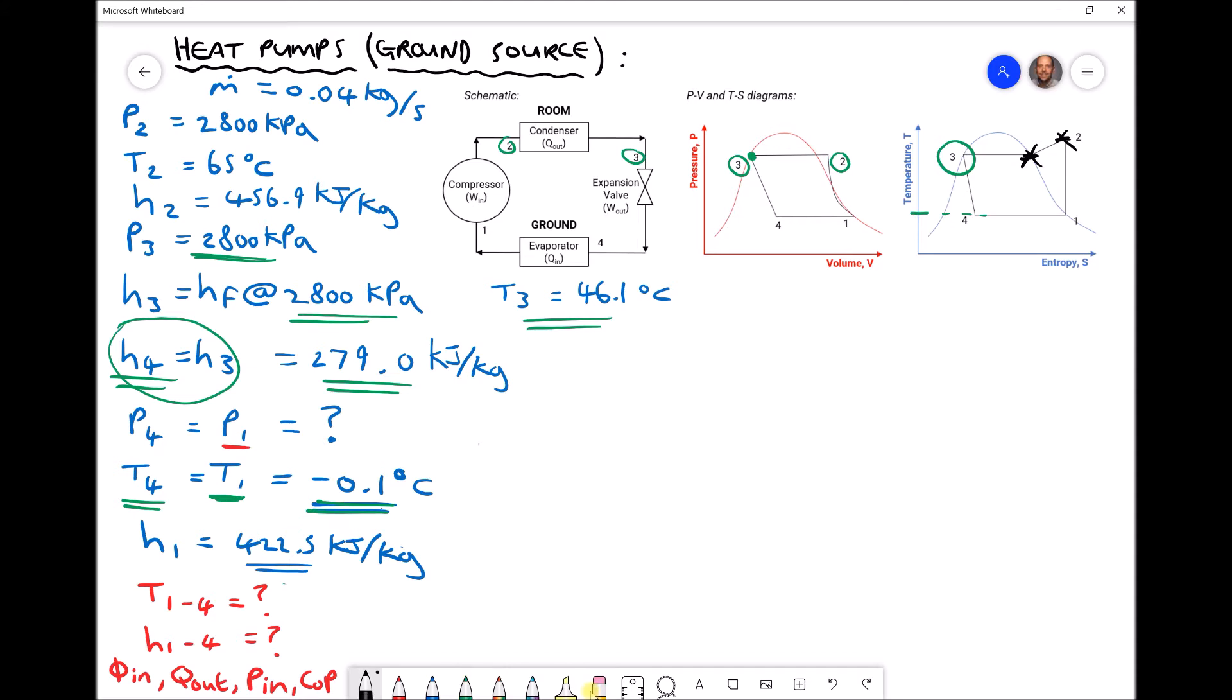So just to carry out a quick check, we have our T1 value here, minus 0.1 degrees C. We have our H1 value here, 422.5 kJ per kilogram. We have our T2 temperature, 65 degrees C, and we have our H2, 456.9 kJ per kilogram. We have our T3 temperature and we have our H3 value, 279.0.